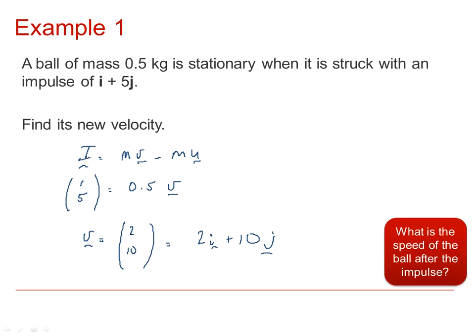If we want to calculate the speed, of course, then that we can get from Pythagoras' theorem. The speed is just the absolute value of the velocity, which is given by 2 squared plus 10 squared. That would be equal to the square root of 104 meters per second.